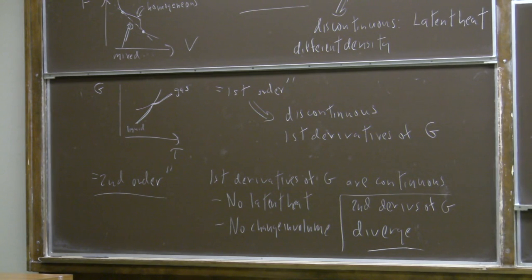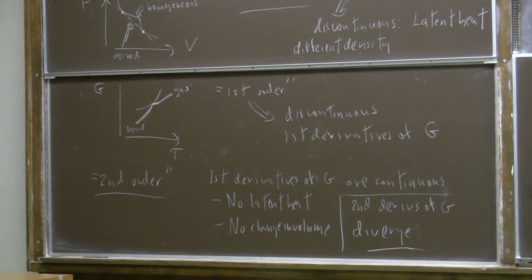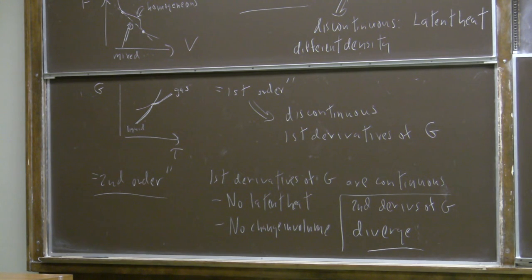For example, the heat capacity at constant pressure is tau times the derivative of entropy with respect to temperature at constant pressure. That's the second derivative of the Gibbs free energy—it's minus tau times the second derivative of G with respect to tau at constant pressure. In a second-order phase transition, that behaves like one over the deviation between the temperature and the critical temperature raised to some negative power. The heat capacity blows up like one over a power of the deviation from the critical temperature.